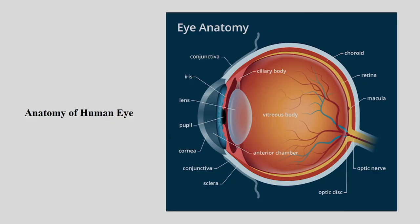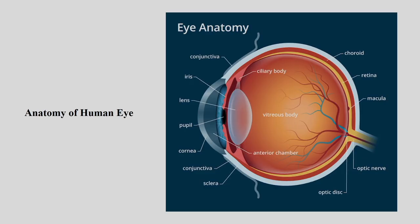Before we go ahead, let us understand the anatomy of the eye. In this picture you can see the structure of the eye. It is not mandatory that you know all these nomenclatures properly, but if you know the anatomy of the eye it becomes easy to understand the logic of why you are measuring what. That is why this structure and anatomy is important.